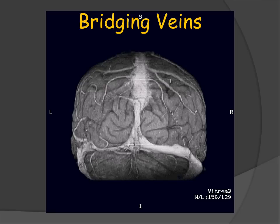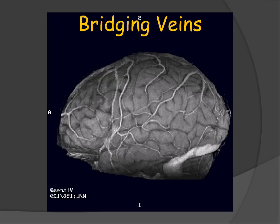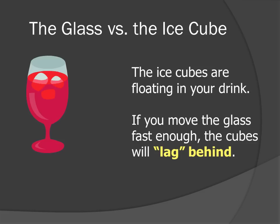So how does this happen? If we look at this 3D reconstruction, looking at the patient from behind, we can see how the bridging veins drain the cerebral hemispheres into the superior sagittal sinus. Classically, sagittal forces are more commonly associated with the formation of a subdural hematoma. In the lateral view, once again, we can see how the bridging veins enter the superior sagittal sinus at a roughly 90-degree angle.